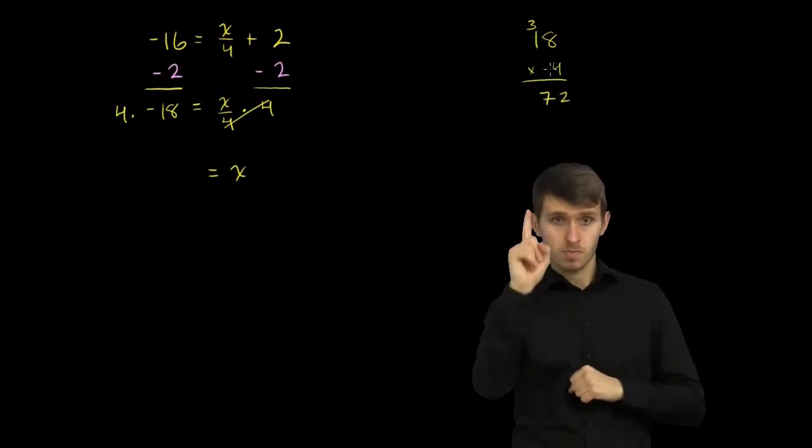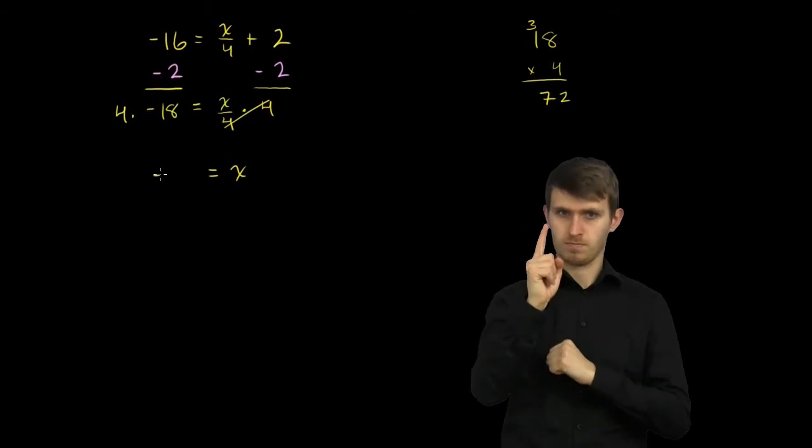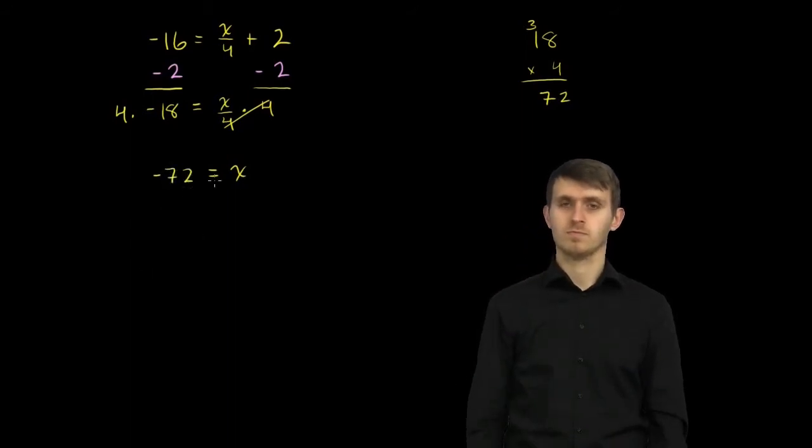But this is negative 18 times 4, so it's negative 72. So x is equal to negative 72.